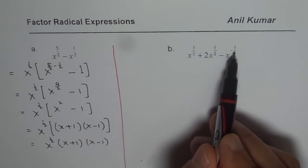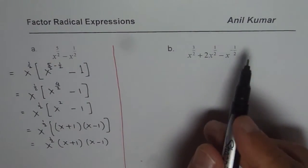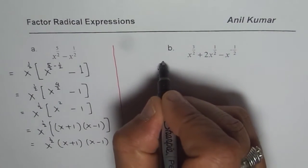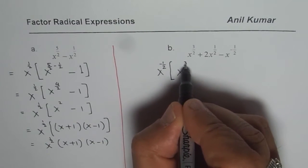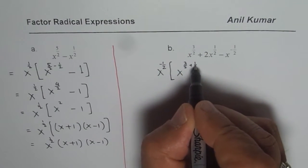Now in this case, x to the power of minus half is the lowest power of x. So we will factor that out. So we will write this as x to the power of minus half. And within brackets, we get x to the power of 3 over 2, minus minus becomes plus. You get the idea?